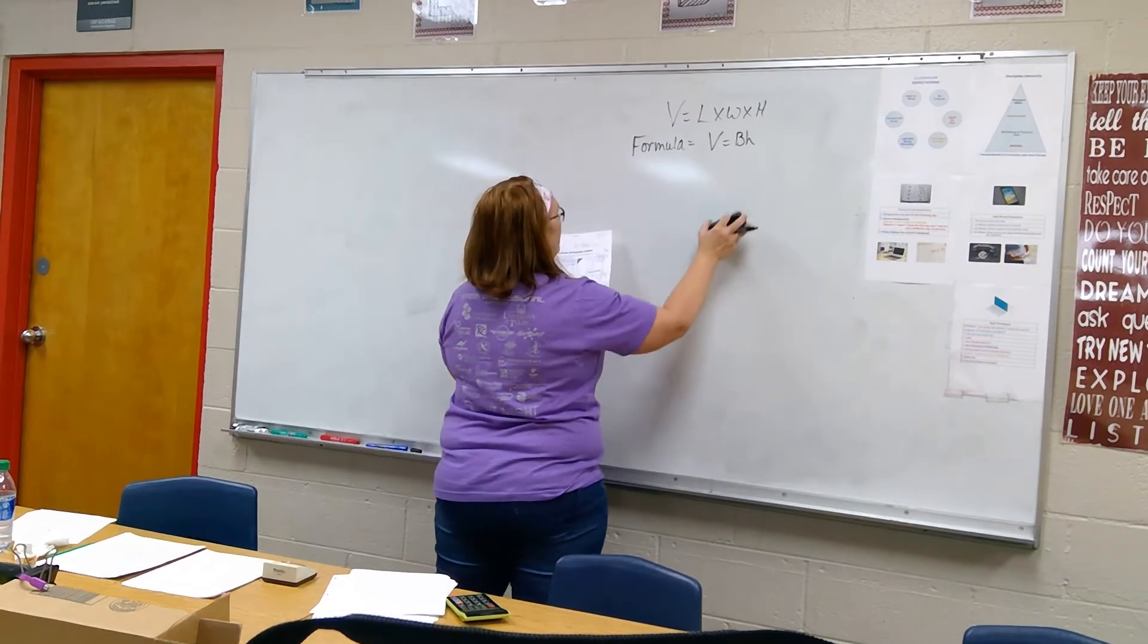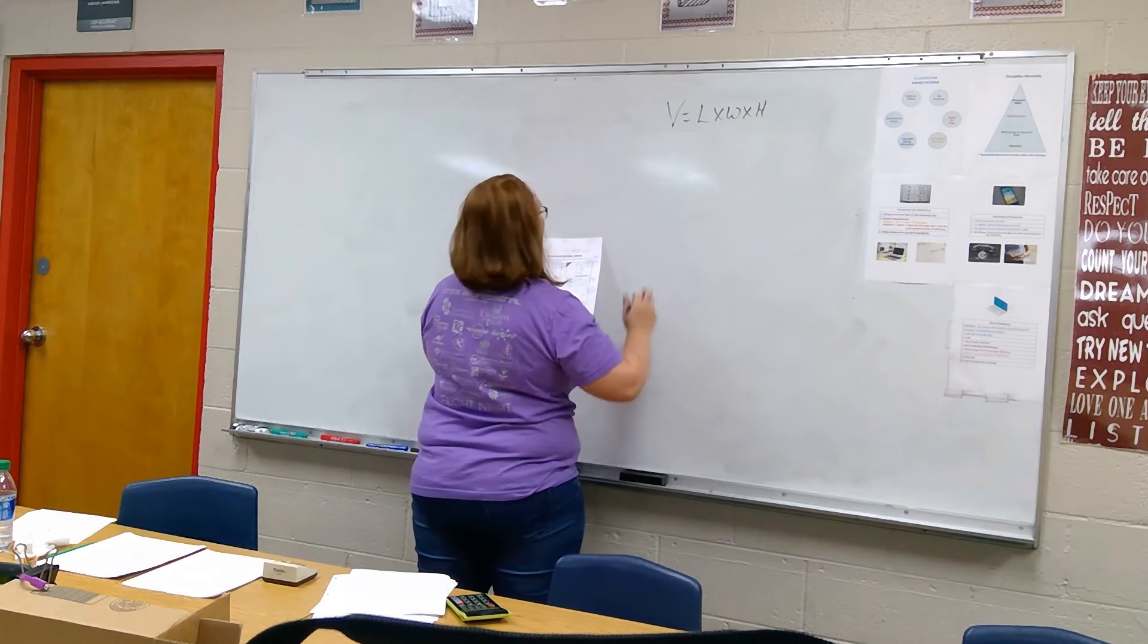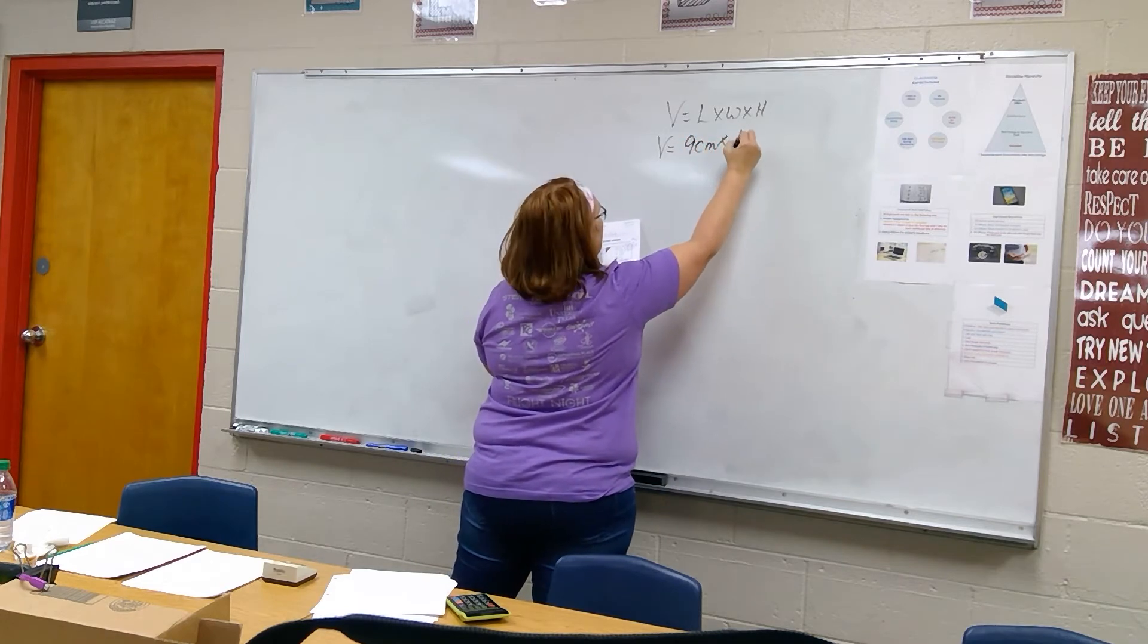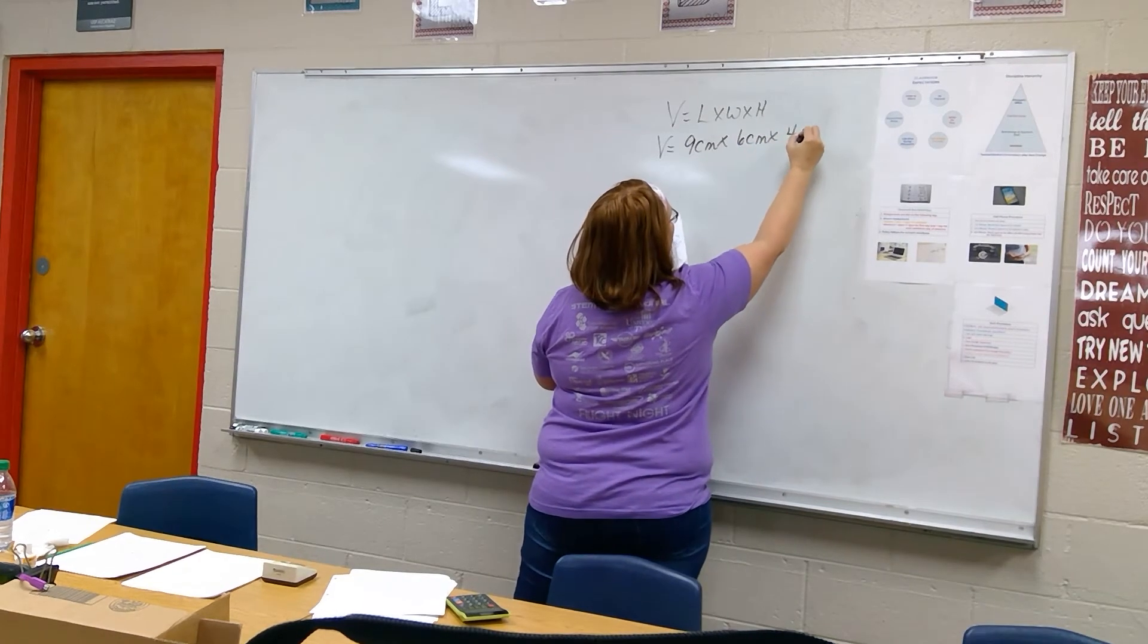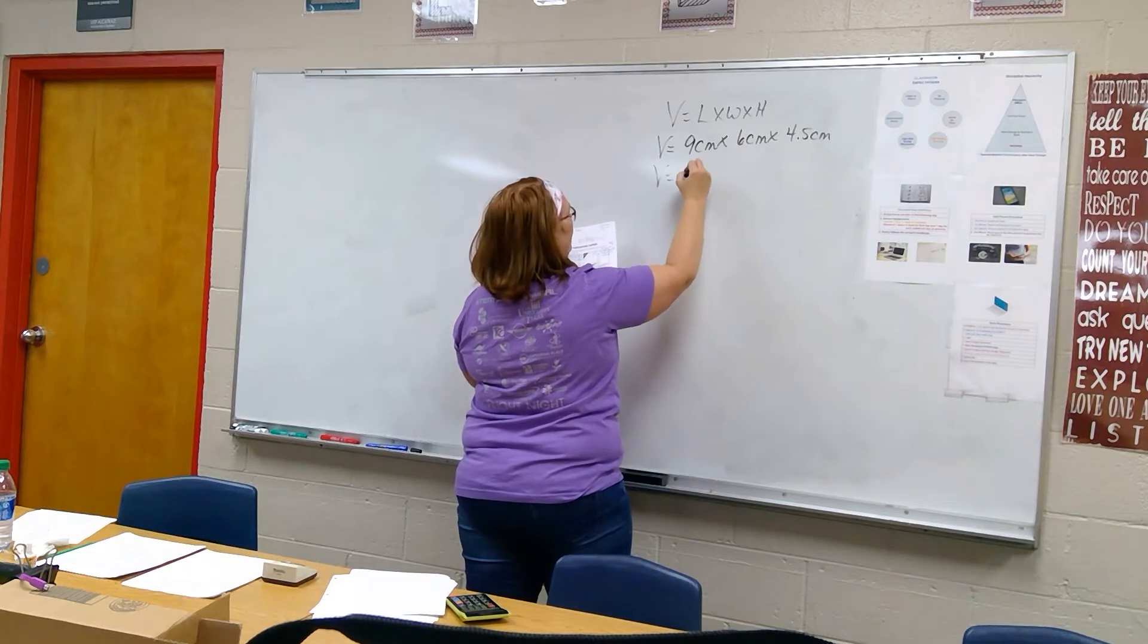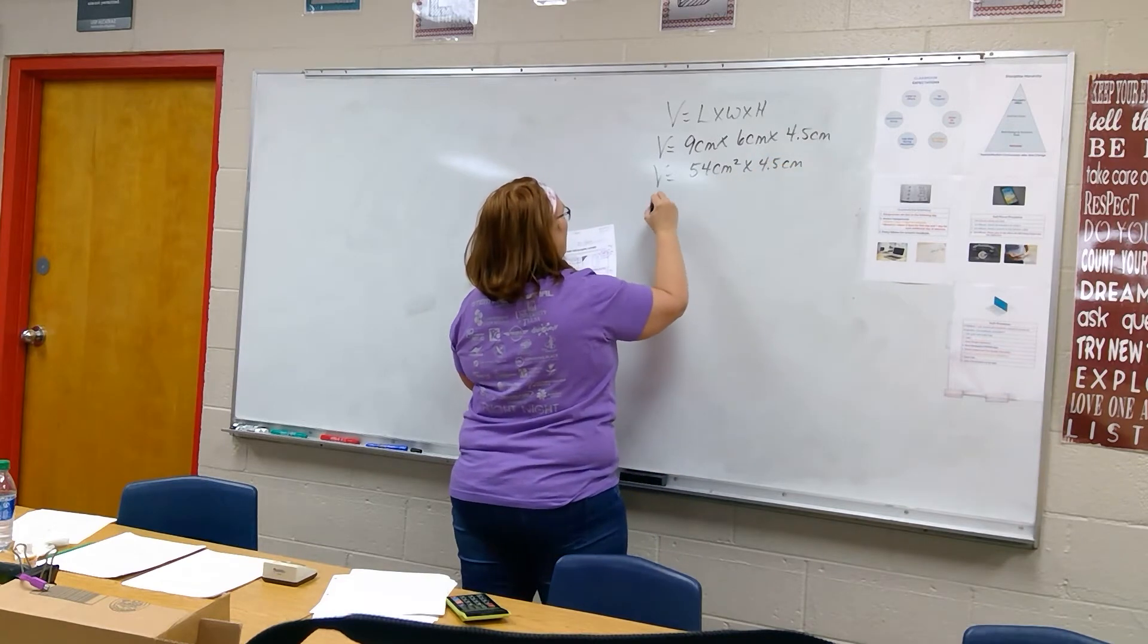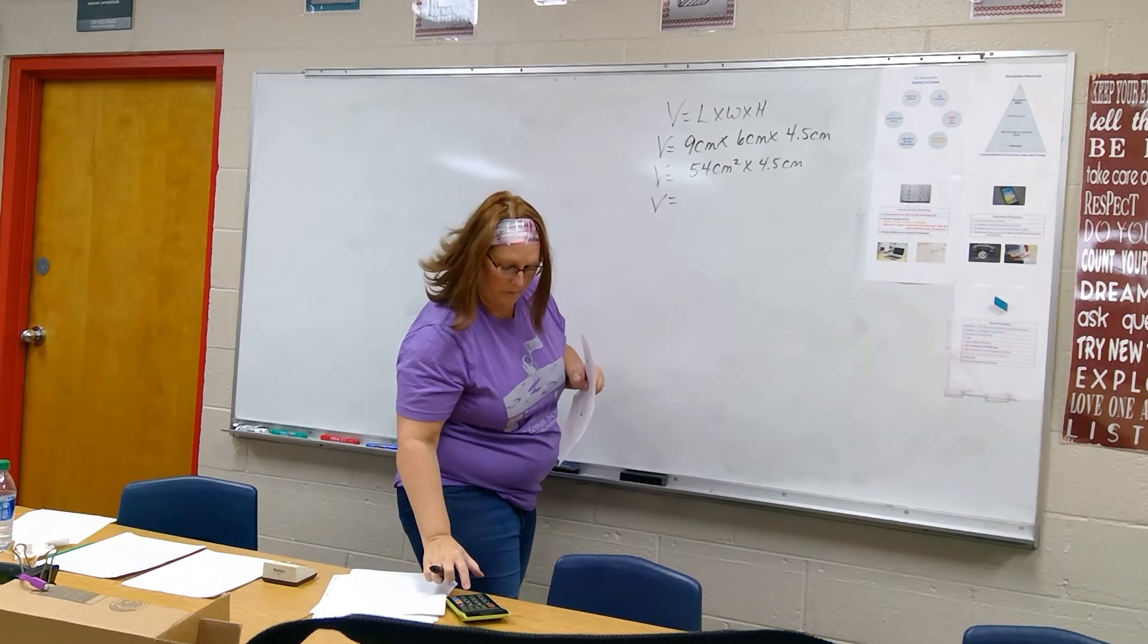Okay, so that's our formula, so v equals what's your length? How long is it? It says it's nine centimeters. How wide is it? Six centimeters. How tall is it? 4.5 centimeters. So volume equals nine times six is 54 centimeters squared times 4.5 centimeters.